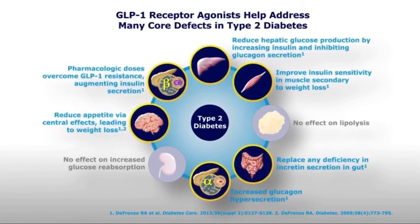In conclusion, I have addressed several key features underlying the pathophysiology of type 2 diabetes, many of which can be improved by GLP-1 receptor agonists. With scientific advancements, our understanding of the core defects in type 2 diabetes will continue to evolve and further clarify the role and importance of GLP-1. I would like to thank all of you today for listening in, and I hope that the knowledge you have gained about the core defects underlying the pathophysiology of type 2 diabetes mellitus will be of help as you go forward in the treatment of your patients.